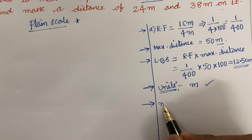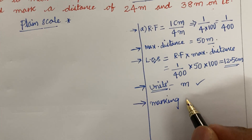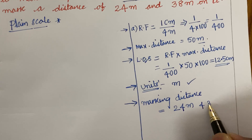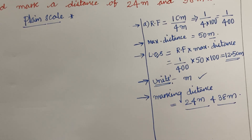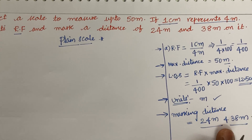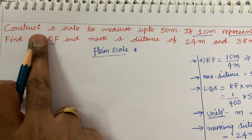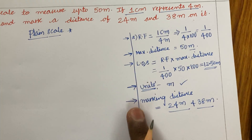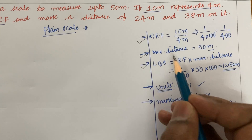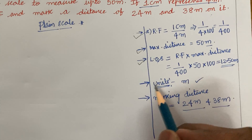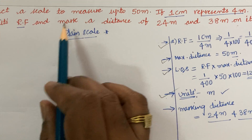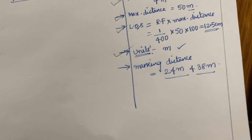The two marking distances given are 24 meters and 38 meters. This is how you work out a scale problem when the type of scale is not stated and RF is missing: first calculate RF, then find the maximum distance, then compute the length of scale as RF × maximum distance converting it to centimeters or millimeters, then check the units to identify plane scale or diagonal scale, and note the marking distances.